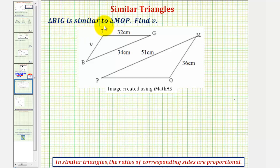We're given triangle BIG is similar to triangle MOP. We want to find V here, which is the length of side BI.